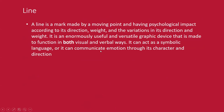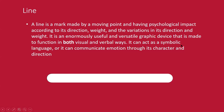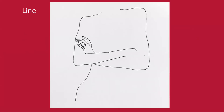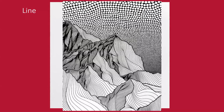A line is a mark made by a moving point, having psychological impact according to its direction, weight, and variations in its direction and weight. It is an enormously useful and versatile graphic device that functions in both visual and verbal ways — it can act as symbolic language or communicate emotion through its character and direction. A line is just an extended point, and line can be tons of different variations. You can create texture with lines that are closer together, overlapping, or curved, and can create depth.